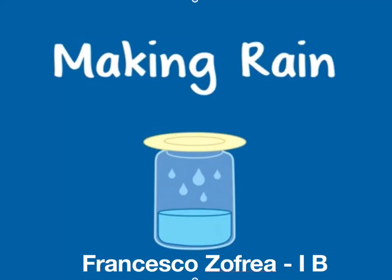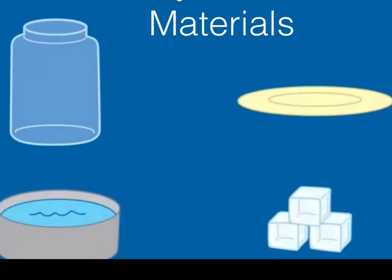Making rain. This experiment helps us to understand where the rain comes from. We need a glass jar, a plate, water and ice.